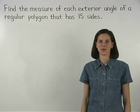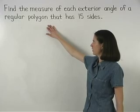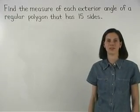In this problem, we're asked to find the measure of each exterior angle of a regular polygon that has 15 sides.